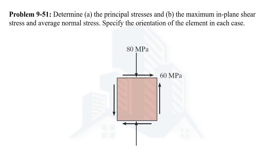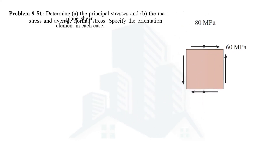Hello everyone. In this video we are going to solve problem number 51 from chapter number 9, Stress Transformation, in the book Mechanics of Materials by R.C. Hibbeler. In this problem we are being asked to determine the principal stresses and also the maximum in-plane shear stresses along with average normal stress. We have to determine these stresses by specifying the orientation of the element in each case.